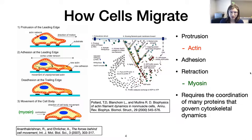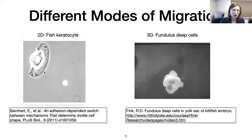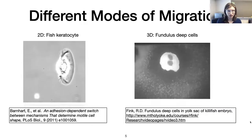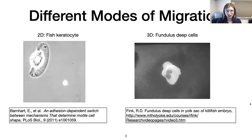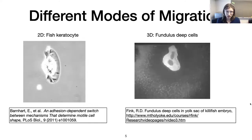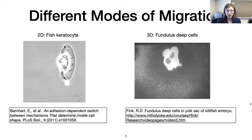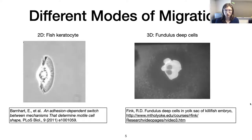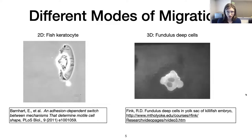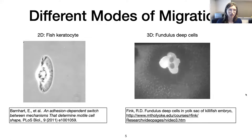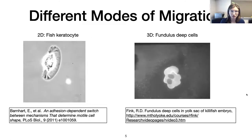This is a complicated process. Many people work on mathematical modeling of just this general two-dimensional migration, which requires a lot of coordination between signaling and cytoskeletal components. That would be more like the keratocyte on the left — the protrusion-adhesion-retraction type. On the right you have more amoeboid, blebby migration — a cell with two nuclei migrating in confinement between two layers of cells. I'm more focused on that 3D type of migration.